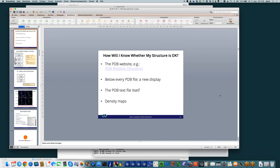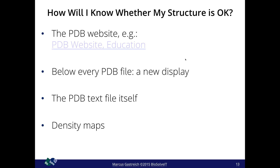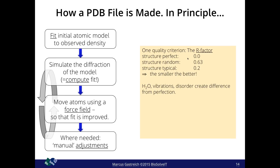Back to the presentation. We looked at density maps and I showed how easy it is to do a quick check before continuing with a structure. To recap, we had the four stages: fitting an initial model, computing a fit and comparing the two, refining using a force field to improve the fit, and doing manual adjustments. Besides resolution, which people pay attention to relatively often, there is something else I want to point your attention to.